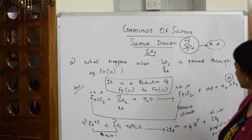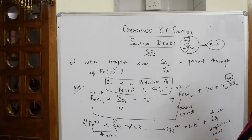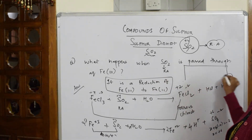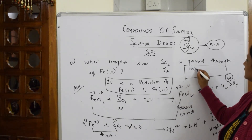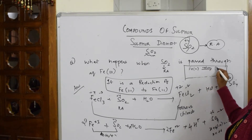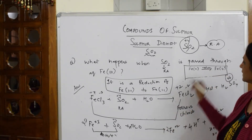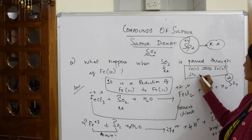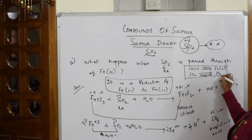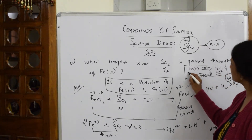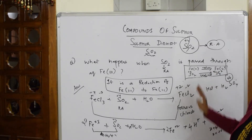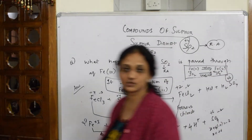Now balancing hydrogen: with four H⁺ on the product side, we need two H₂O on the reactant side. To summarize: whenever such a reaction is given, remember Fe³⁺ gets reduced to Fe²⁺, and SO₂ gets oxidized to SO₄²⁻ — the oxidation state of sulfur goes from plus four to plus six.